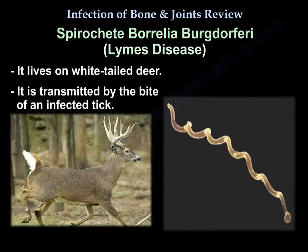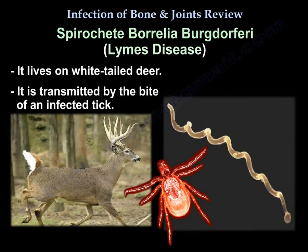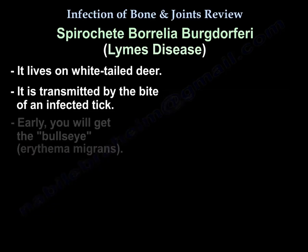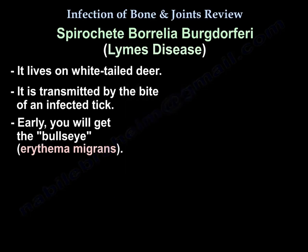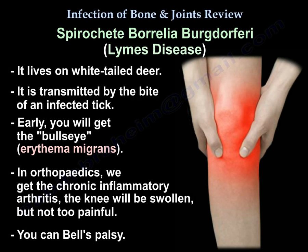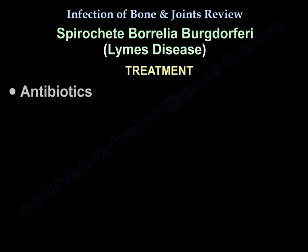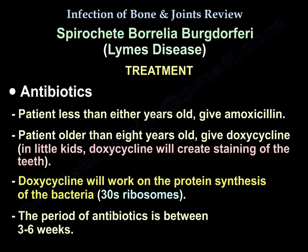Early Lyme disease presents with the bull's-eye rash — erythema migrans. In orthopedics, the chronic form presents as inflammatory arthritis with a swollen but not very painful knee. Bell's palsy can also occur. Treatment is antibiotics: amoxicillin for children under 8 years, and doxycycline for those over 8 — doxycycline is avoided in young children because it causes staining of the teeth. Doxycycline works on bacterial protein synthesis at the 30S ribosome. The antibiotic course is 3 to 6 weeks.